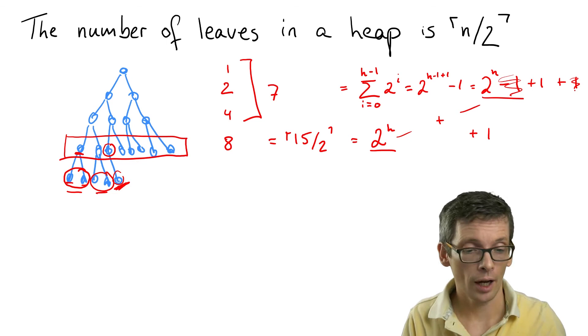So this is the case that I have an even number of nodes, and n half are leaves.